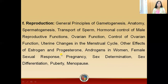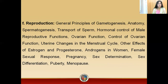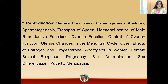Then we will move towards reproduction. We will have a general discussion on the anatomy of spermatogenesis and discuss in detail the whole physiology of the reproductive system. We will study principles of hematopoiesis, transport of sperms, hormonal control of male reproductive functions, organ functions, control of organ functions, sex determination, sex differentiation, and reproductive immunology.